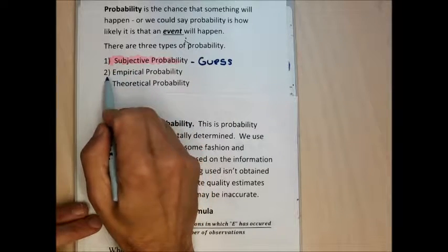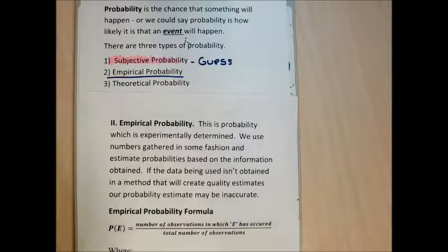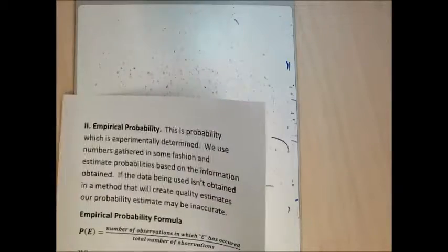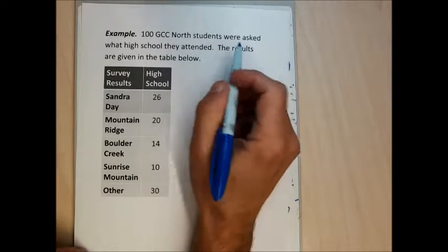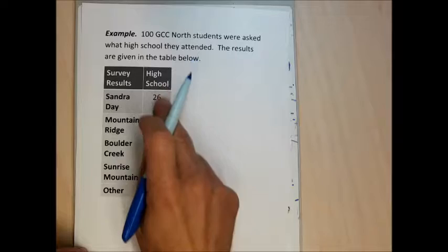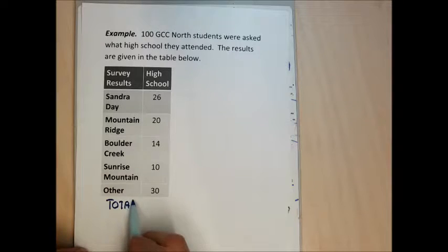Subjective probability is kind of hard to test on because it's based on your guess or somebody's guess — it's too loosely defined. But empirical probability is not so loosely defined. Here's an example: 100 GCC North students were asked what high school they attended. The results are given in a table — this is kind of a frequency distribution.